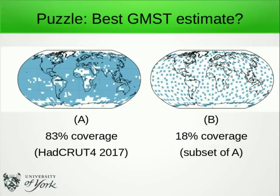Suppose that you are offered two observational datasets. The first, on the left, covers 83% of the planet. The second, on the right, only covers 18% of the planet. You want to estimate the global mean surface temperature anomaly, and you're going to do it by calculating the average of all the cells for which there are observations, weighted by the area of each grid cell. Which observational dataset should you use — A or B?